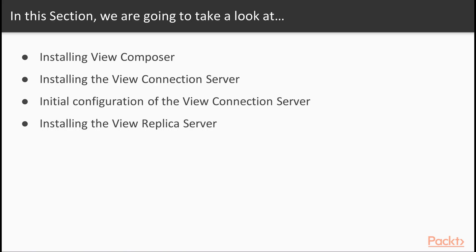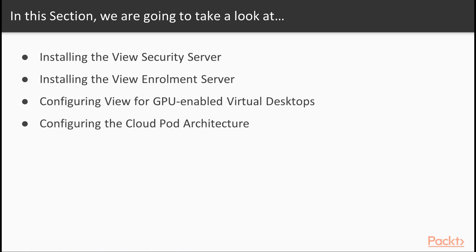So what are we going to learn in this section? We're going to install the Horizon View software, starting with the View Composer server and configuring the View Composer database. Next we will install the Connection server and complete the initial configuration tasks, such as ensuring the license has been added and configuring the vCenter server information. We will then move on to installing a Replica server, a Security server and then an Enrolment server. We will finish the section by looking at the steps required to configure the infrastructure to take advantage of GPU hardware in the host server, so that you can deliver high-end hardware accelerated graphics to the virtual desktop machines.